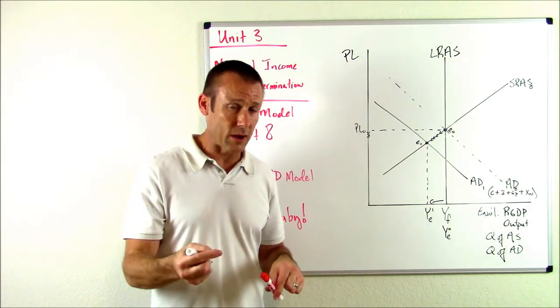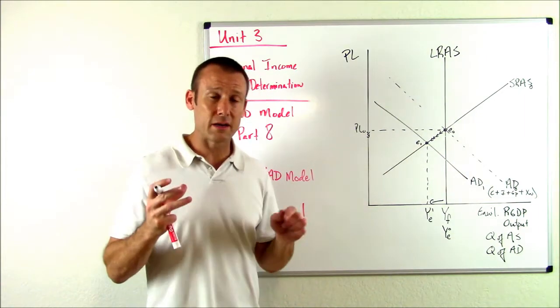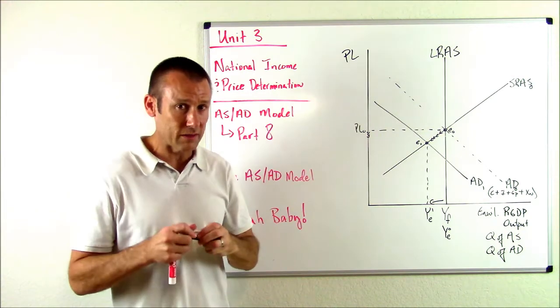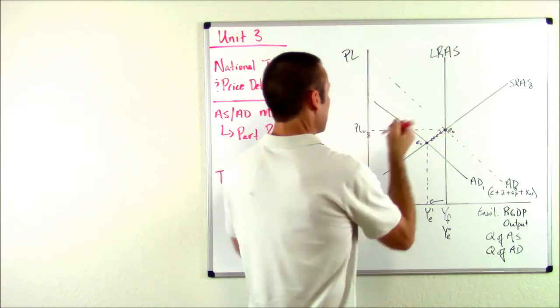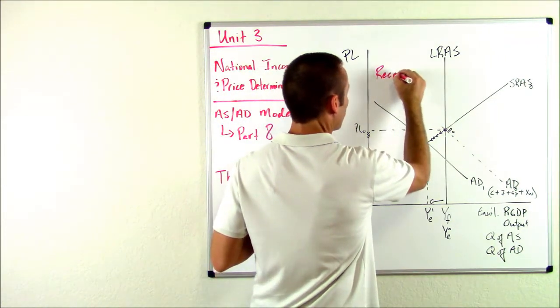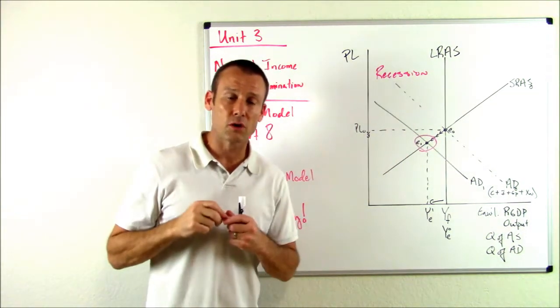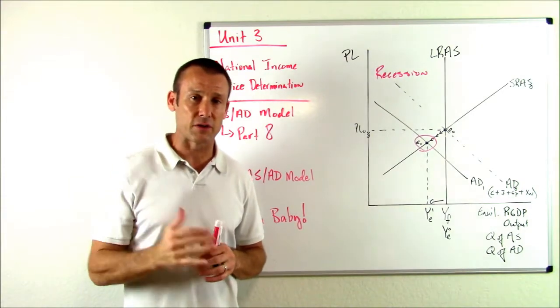We are in a recession. This left-hand side of LRAS is always indicating an economy in recession. So if you have an equilibrium to the left of LRAS, you are showing an economy in recession.